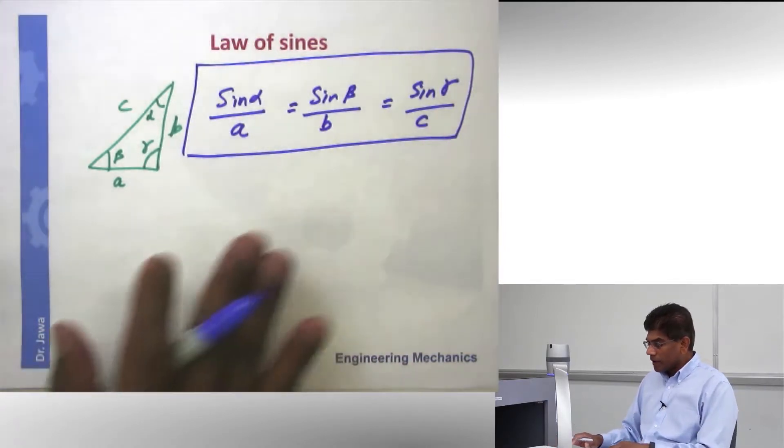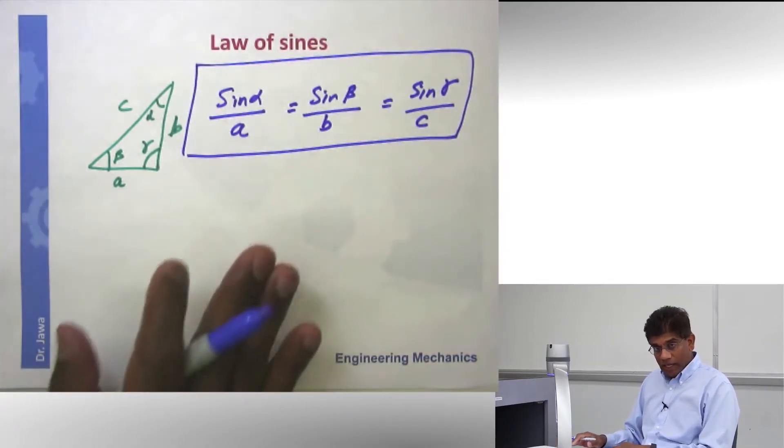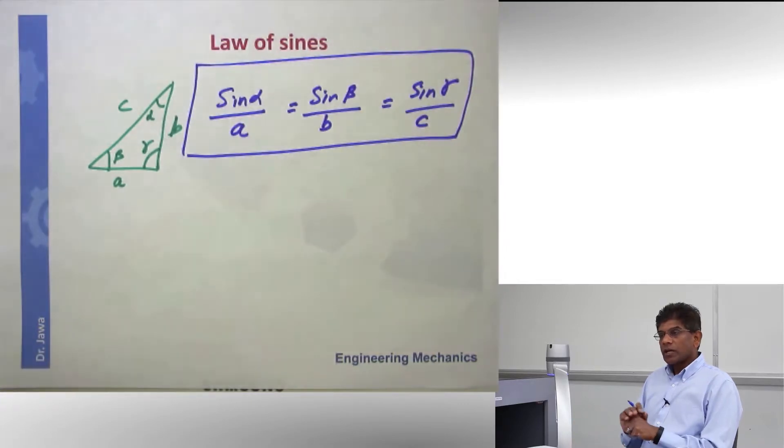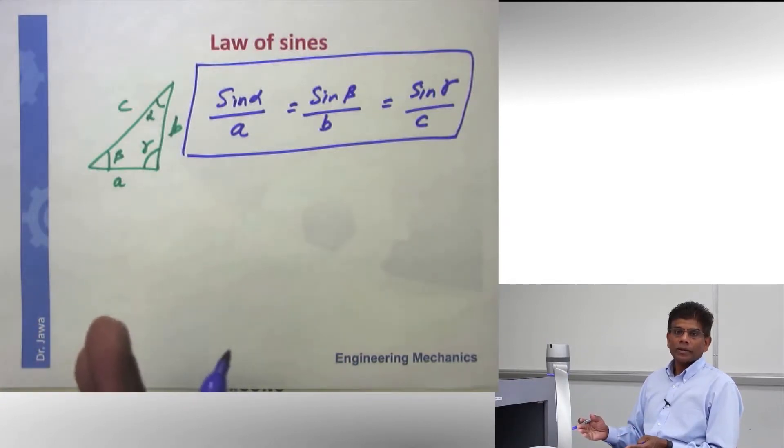And I'm not going to spend time proving this. You can actually verify this yourself. So a combination of law of sines and law of cosines will help you to solve any problem involving vector addition or subtraction. Let's take a look at an example.